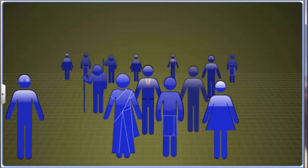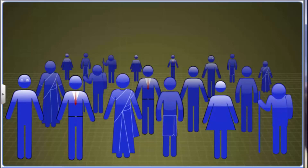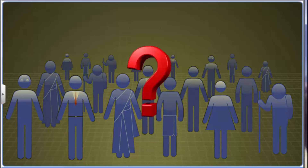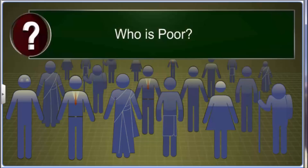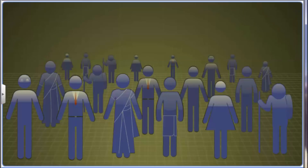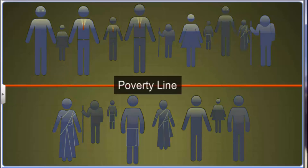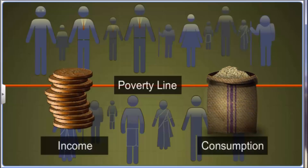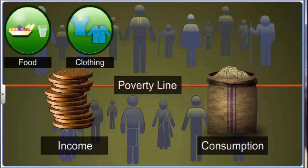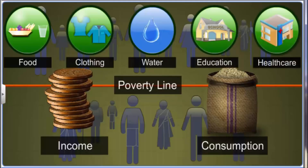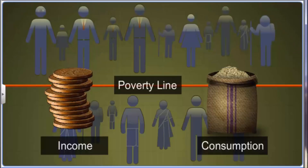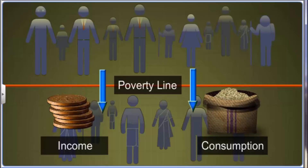The government has launched several welfare schemes for the poor. To ensure that these benefits reach the correct people, it is important to have a way to identify them. The poverty line is a commonly used way to identify the poor. It is a measure based on levels of income and consumption by people. The concept of poverty line is based on the fact that a person must have a minimum level of income and consumption to satisfy the basic needs of food, clothing, clean water, education and health care. When the income or consumption of a person falls below this minimum level, the person is considered to be poor.